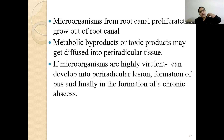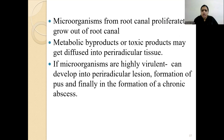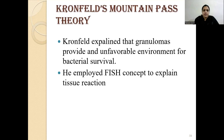Microorganisms from the root canal proliferate and grow out of the root canal. Metabolic byproducts or toxic products diffuse into the periradicular tissue. If microorganisms are highly virulent, they can develop into a periradicular lesion with pus formation, finally resulting in the formation of a chronic abscess.